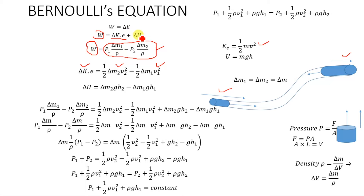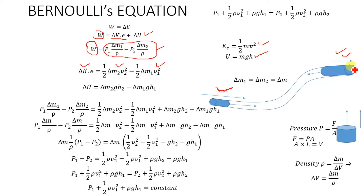The potential energy is PE equals mgh. The change in potential energy is ΔPE equals Δm2·g·h2 minus Δm1·g·h1, subtracting the initial potential energy from the final potential energy.